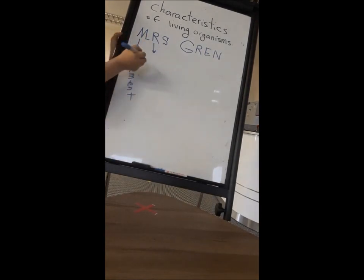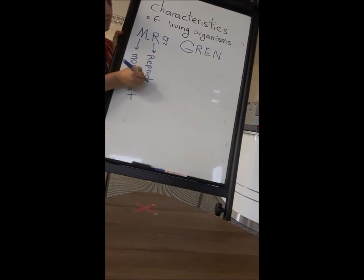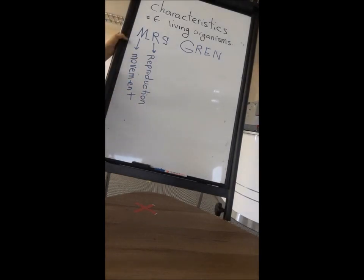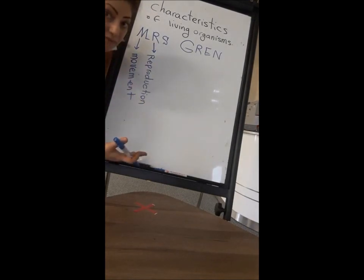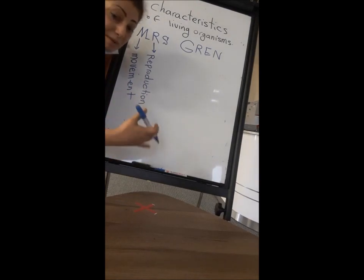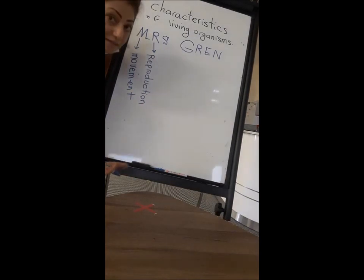R stands for Reproduction. Reproduction means anything that makes offspring of itself — more of the same kind of organism, more cells, more babies, or whatever — is called alive. If that organism is able to reproduce, to make a similar kind of itself, it is alive. If not, it's dead.